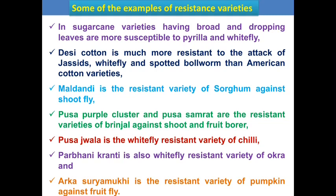Examples of resistant varieties: desi cotton is much more resistant than American cotton varieties against jassids, whitefly, and spotted bollworm. Maldandi is a resistant variety of sorghum against sorghum shoot fly. Pusa Purpur and Pusa Sambarata are resistant varieties of brinjal against brinjal shoot and fruit borer. Pusa Jwala is a whitefly-resistant variety of chili. Parbhani Kranti is a whitefly-resistant variety of okra. Arka Suryamukhi is resistant variety of pumpkin against fruit fly.